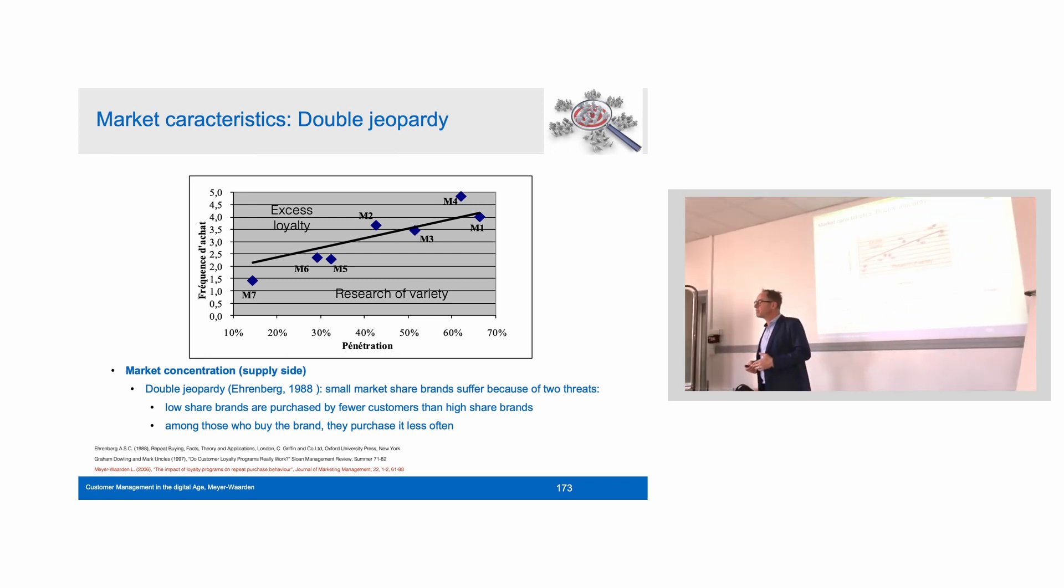Double jeopardy means that small share brands are jeopardized twice. First of all, they have less market share and subsequently less buyers, less penetration. The first jeopardy. The second jeopardy is they have less buyers and these buyers buy less often or are less loyal. So they're hit twice. They have less buyers, less penetration, and these buyers buy less often.